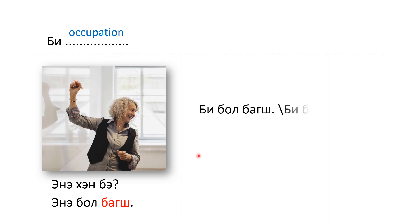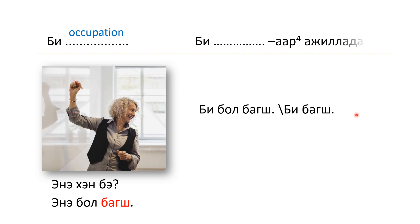To say 'I am a teacher' using this sentence structure, you can say 'bi bagsh' or 'bi bagsh'. The difference is the word 'bol' — you can use it or leave it out. 'Bi bol bagsh' sounds more formal, so in everyday speaking we just say 'bi bagsh'.